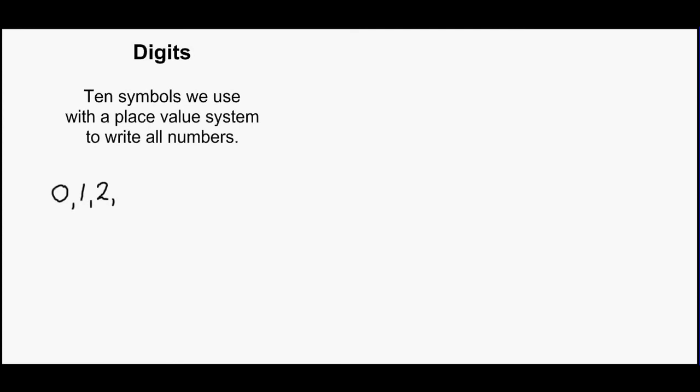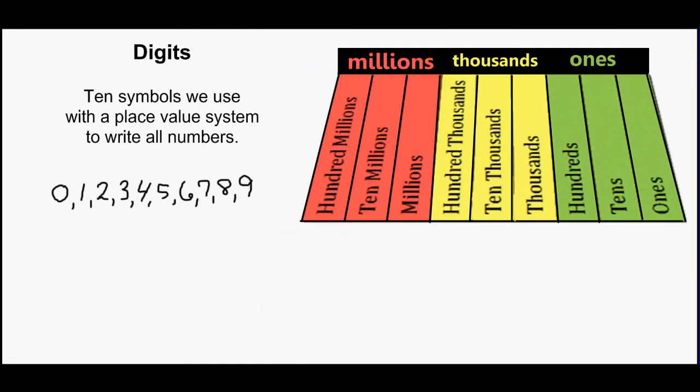2, 3, 4, 5, 6, 7, 8, and 9. With these ten digits and a place value system, we will be able to read and write all numbers.